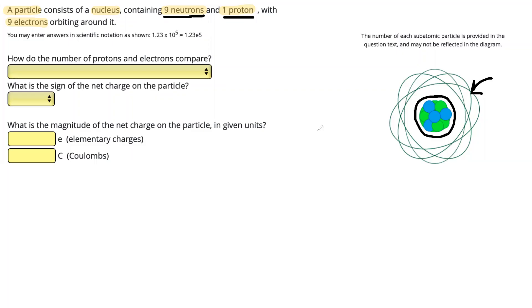Okay, so we're going to be figuring out the overall charge on our particle here. The first question is, how do the number of protons and electrons compare? Because we know protons are positively charged and electrons are negatively charged. In this question, we have one proton and nine electrons, so we have more electrons than protons.